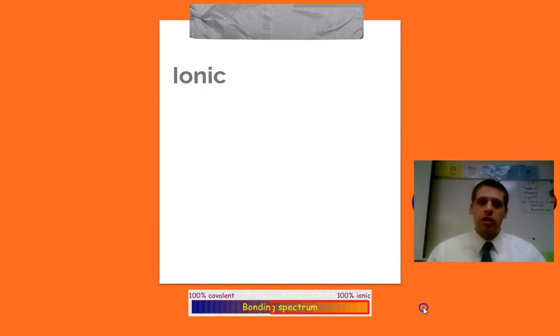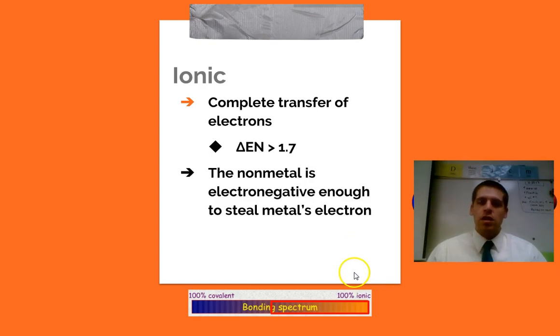Now we're sliding even further over on our spectrum. Our difference in electronegativity is even greater, and we're involving the complete transfer of electrons. So the non-metal is so electronegative, it completely pulls the metal's electron away. In ionic bonds, we're always going to be dealing with a metal bonded with a non-metal. So that's a good rule of thumb. Sometimes your electronegativity difference will be kind of hovering around 1.7. If it's a metal and a non-metal, it's going to be ionic.